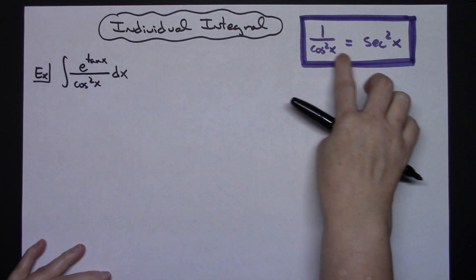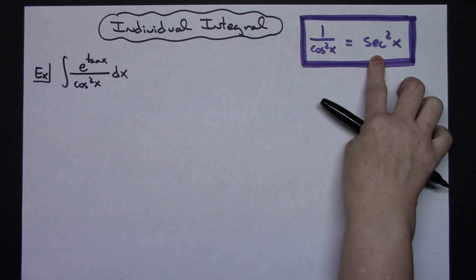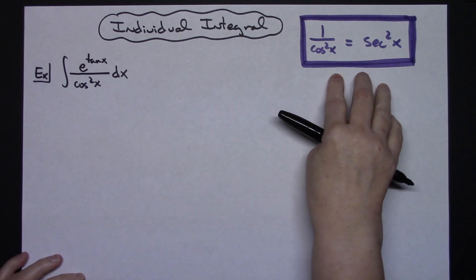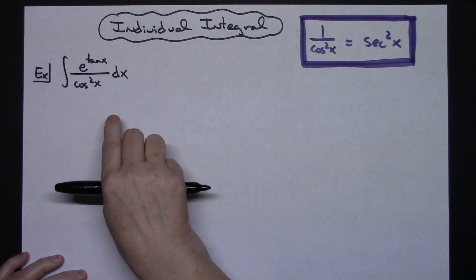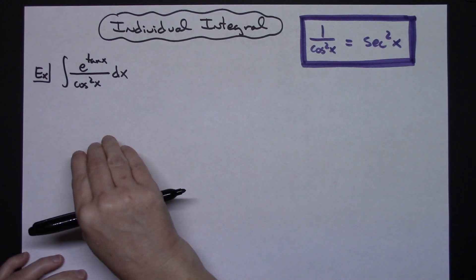So 1 over cosine x squared is equal to secant squared x. We'll make that substitution later in the problem, but it is going to turn out to be a pretty straightforward integral.